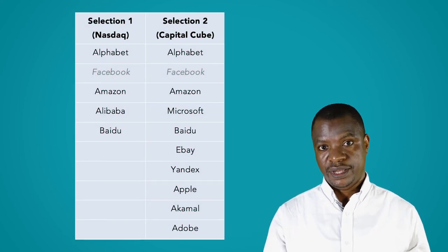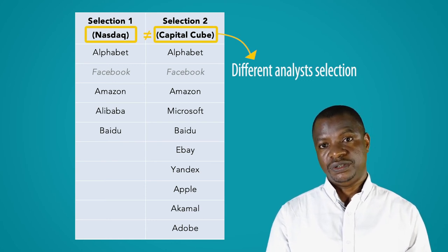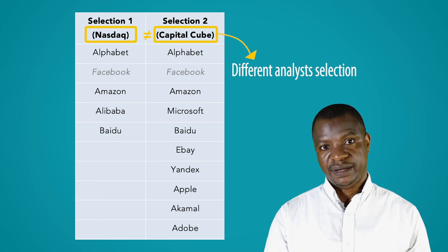Therefore, a peer can be comprised of firms from different sectors or industries. For example, Toyota, a car manufacturer, Coca-Cola, a beverage company, and Microsoft, a technology company, can belong to the same peer. Could you have different peer groups for Facebook? The answer is yes. It is possible to have different peer groups for Facebook. Here we have an example of a Facebook peer selected by a different analyst, which includes only Alphabet, Amazon, Alibaba, and Baidu. To sum up, once we have an appropriate peer, we can use it for the purpose of valuation, which is now the next stage in the valuation process.